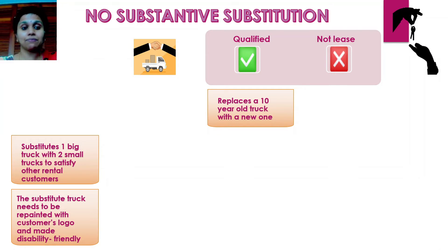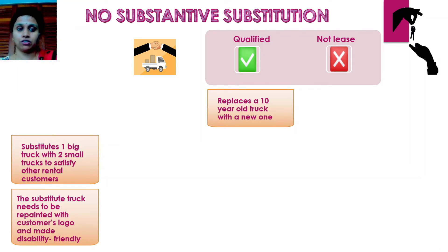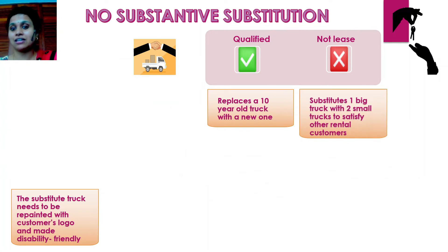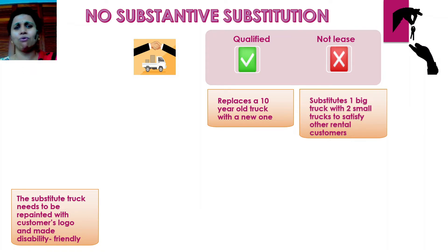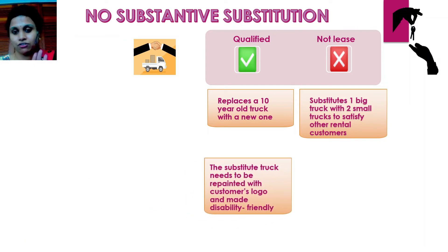In the second example, if the supplier substitutes one big truck with two small trucks, the customer cannot say no even though it may be more inconvenient to manage two small trucks. We would say this underlying asset does not qualify. Finally, if the contract allows the supplier to substitute the truck, but he needs to paint it with the company logo and make it friendly for disabled users — there is a lot of cost, effort, and time involved in getting the substitute truck ready. In this case, the contract does not give substantive substitution rights to the supplier, and therefore it qualifies under IFRS 16.